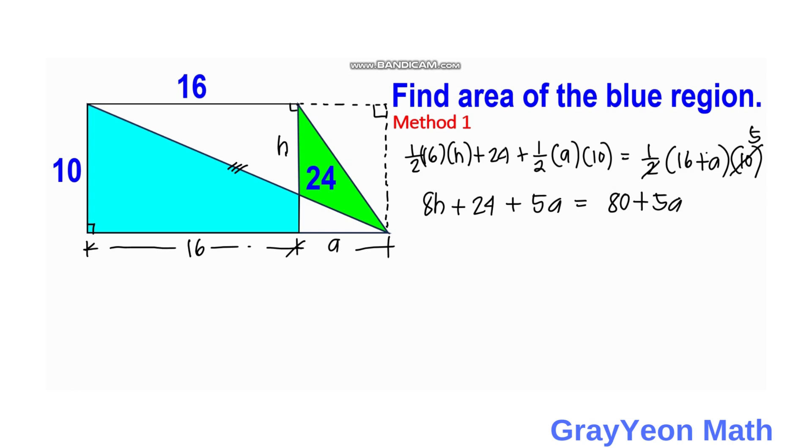We cancel out this 5A, and we have 8H is equal to 80 minus 24. And 8H is actually equal to 56, and H is equal to 7.